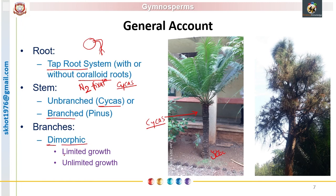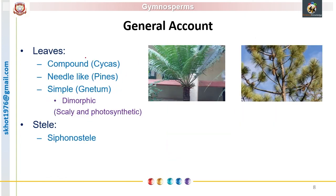Certain branches are of limited growth, meaning they grow for a particular season, whereas certain branches are of unlimited growth, meaning they continue their growth over many seasons or years. Usually branches of limited growth are produced on branches of unlimited growth. These dimorphic branches can be seen in conifers like Pinus.